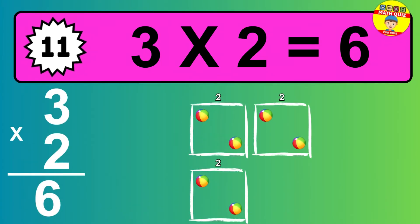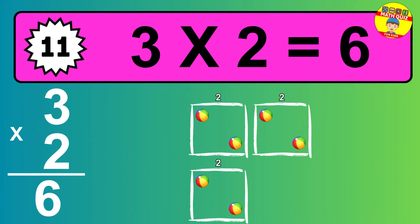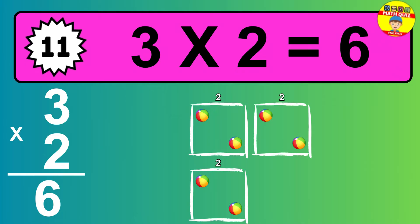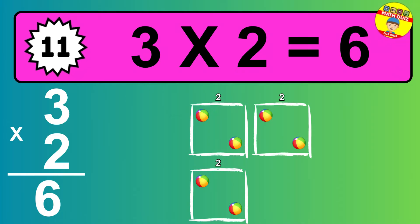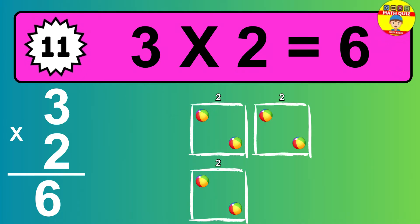Question 11. 3 times 2 equals what? The answer is 3 times 2 is 6. We have 3 groups with 2 balls each one. So how many balls do we have? Six balls.